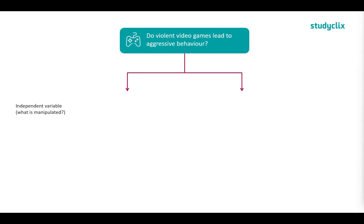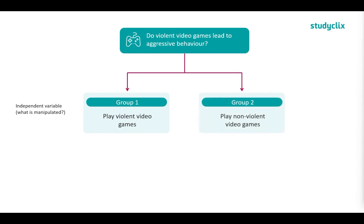In our experiment, group one may play violent video games and group two may play non-violent video games. Now for the dependent variable — what is being measured? What are the violent video games affecting? We're seeing if it has an effect on aggressive behaviour, so aggressive behaviour is our dependent variable, and we'll measure it by looking at the incidence of aggressive behaviour.